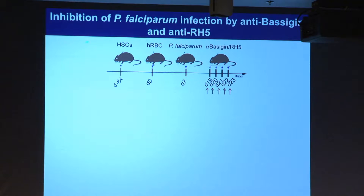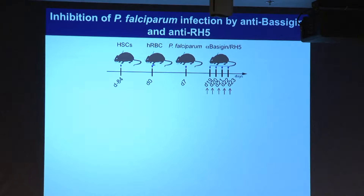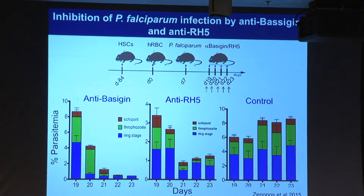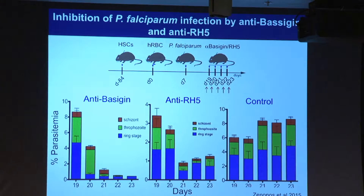We used these monoclonal antibodies in this system to see how effectively they can control the infection. We generated humanized mice, induced infection, then gave mice either anti-basogen antibody (against the host receptor) or anti-RH5 (against the parasite receptor) over five days, assaying the level of parasitemia. In the PBS control, parasite levels are high. With anti-basogen antibody, infection is initially high but the parasite level drops enormously.